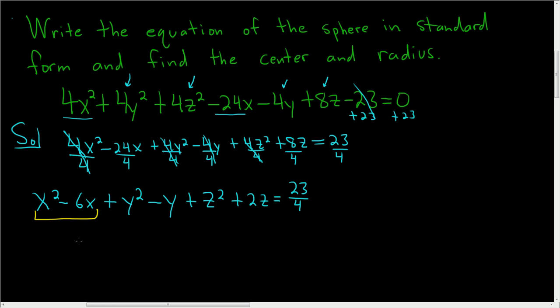So we'll write this down again. x squared minus 6x. And now we look at the coefficient of x, which is negative 6. We divide that by 2, and we square it. So we get negative 3 squared, which is 9. And so we add a 9.